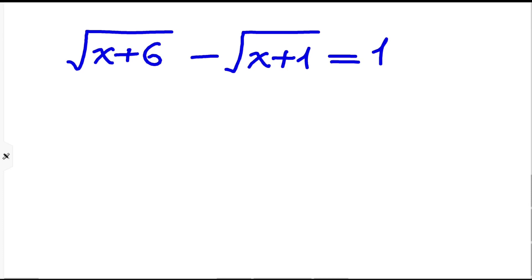We want to find x values that satisfy this equation. Let's begin by calling the conjugate of this expression, which is square root of x plus six plus square root of x plus one. Let's call this A.